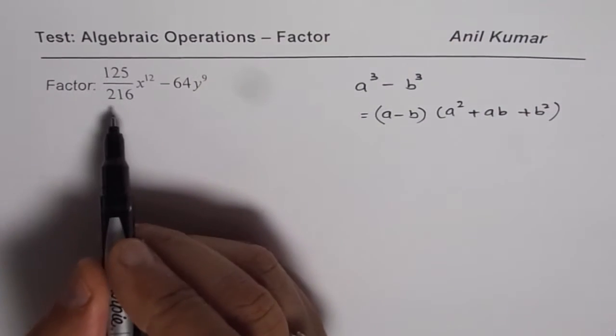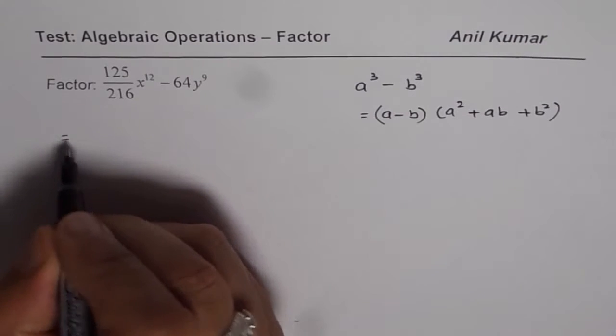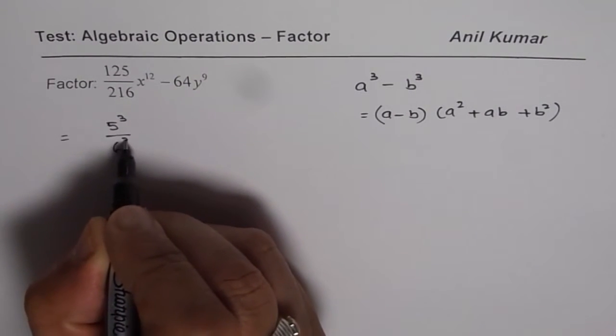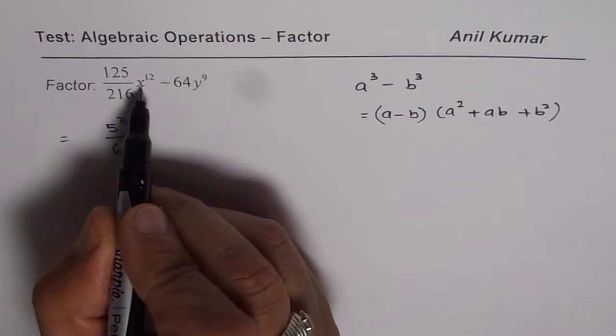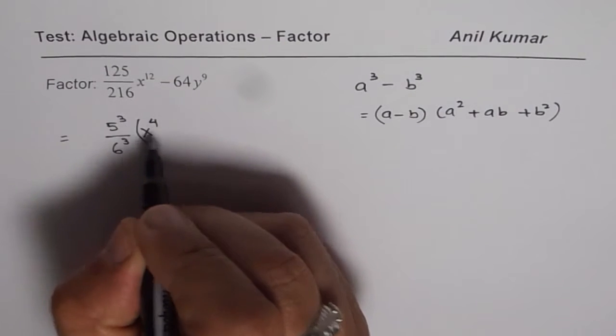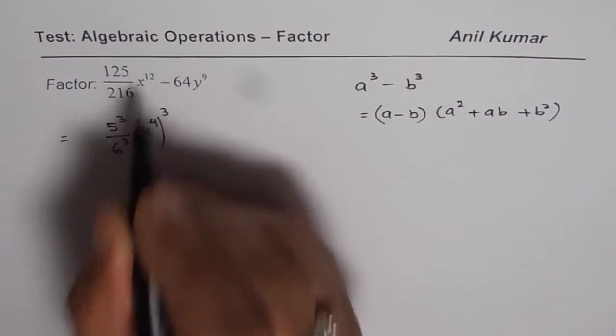So 125 and 216 could be written as 5 cube over 6 cube. Now we have to write x to the power of 12 as a cube. So we could write this as x to the power of 4 and then we can cube it. So we get 12.